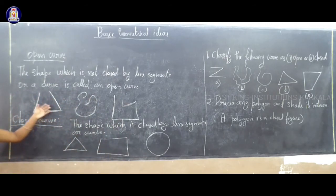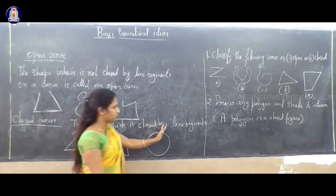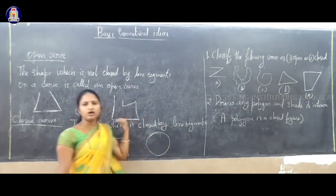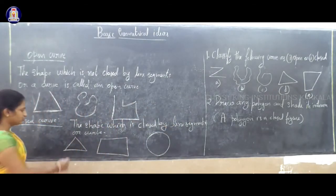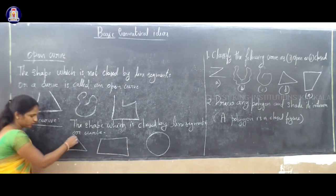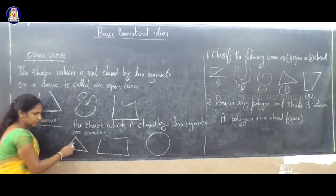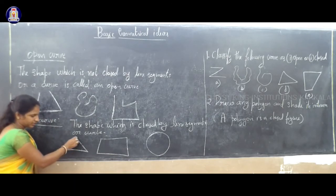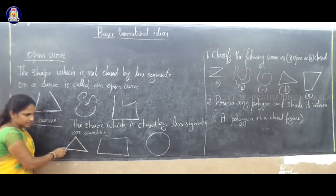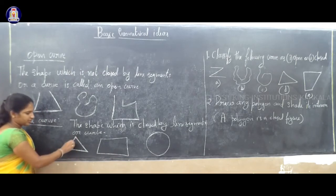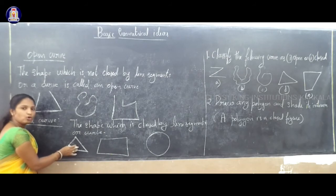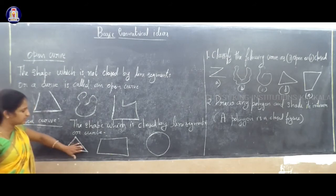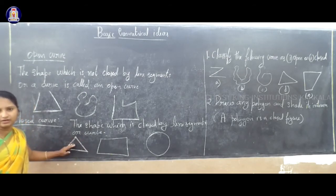Understand what is open curve and closed curve. The shape which is closed by line segment or curve — maybe you can use line segments: one, two, three — these three are line segments, sides. If these three line segments are closed, this is called a closed figure. This is also an example of a closed curve.